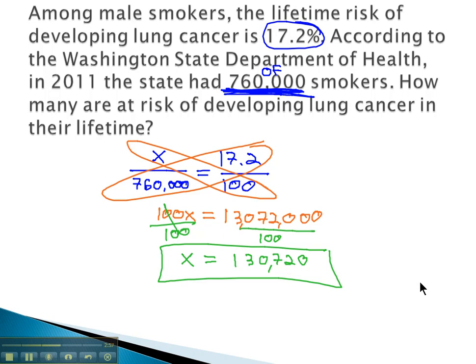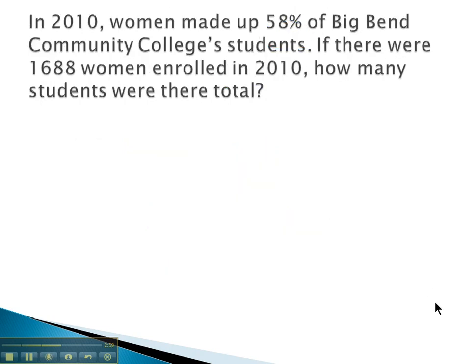Let's try another example. In this problem we find out that in 2010, women made up 58% of Big Bend Community College's students. If we know there were 1,688 women enrolled, how many students are in total? We need to decide: does 1,688 represent all of Big Bend's students, or only part of them? It's part of them — it's just the women. The women are 58%; that is the interesting part.